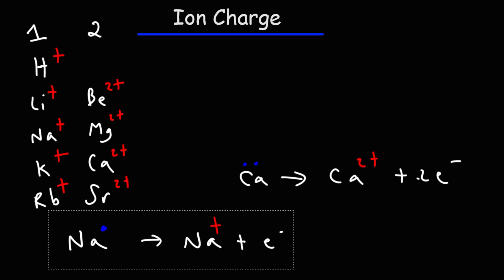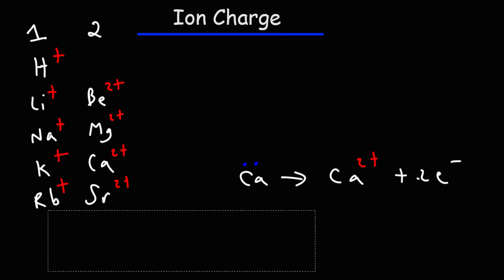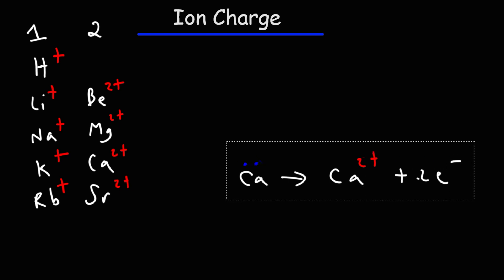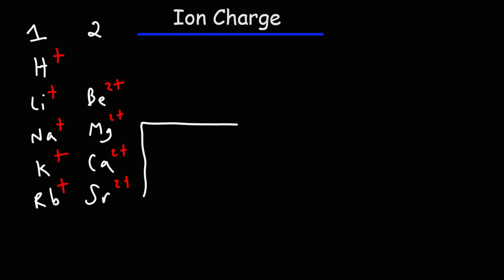Metals typically form positively charged ions, whereas non-metals typically form negatively charged ions. In the middle, we have the transition metals, which we'll talk about later in this video.